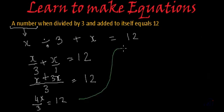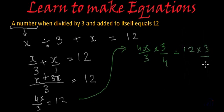So if we solve it further, we want this x to be alone. So on the left hand side we have to multiply it by 3 by 4. So it will be 4x by 3 multiplied by 3 by 4. And since we have multiplied left hand side by 3 by 4, we have to multiply right hand side also by 3 by 4. So we will get 12 multiplied by 3 by 4.